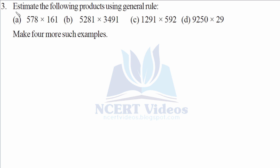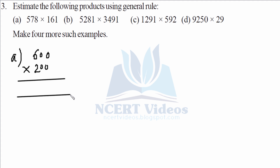Question three: estimate the following products using the general rule. We round off towards the extreme left digit. For part A, 578 is closer to 600 and 161 is closer to 200. We write the zeros and multiply: six into two gives twelve, so the answer is twenty thousand.